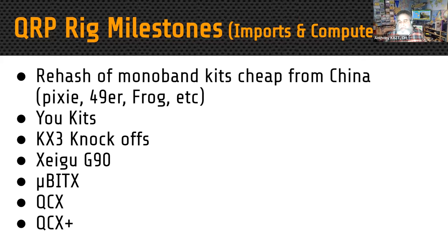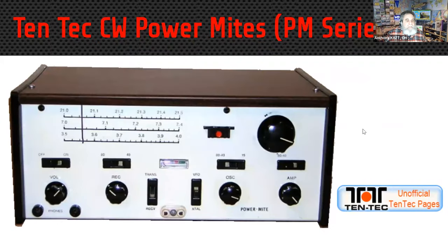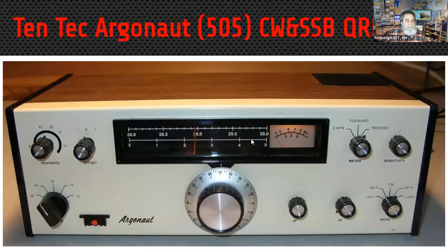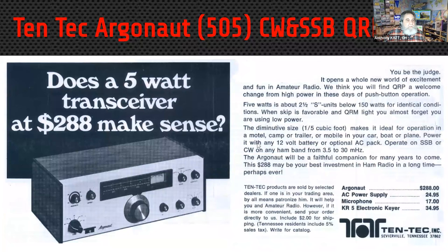There has recently been a rehash of mono-band kits — cheap versions available from China, such as the Pixie. I recently bought a package of 10 Pixies delivered to my house for under $22. I'm going to build one with my grandson. There's also a variety of KX3-type knockoff radios out there. The uBITX series, the QCX series, and now the QCX Plus and QCX Mini are all great radios. Here's my Ten-Tec Power Mite and some pictures of the whole Power Mite series — here's an Argonaut 505 ad.